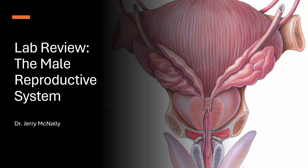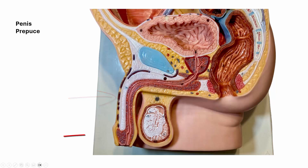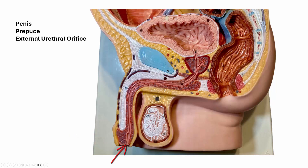In this lab review we're going to look at the male reproductive system. Looking at this model we see the penis, the prepuce or foreskin, and the external urethral orifice.